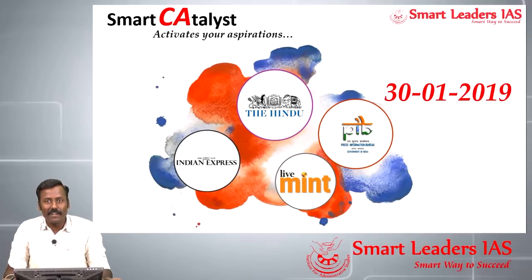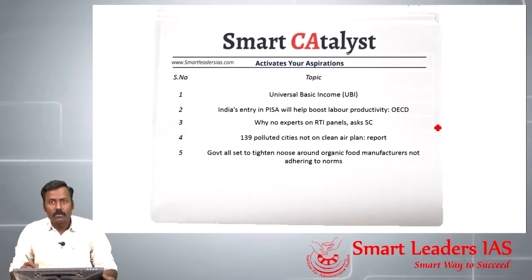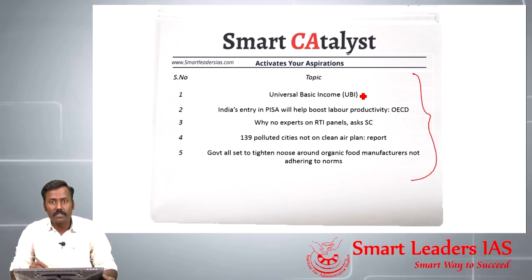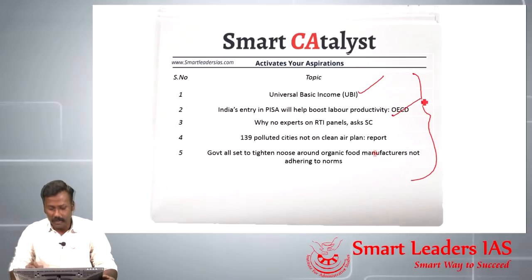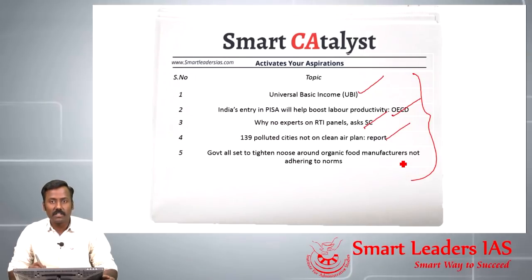Hi all, welcome to Smart Catalyst, 30th January 2019. Today we will be discussing five topics: universal basic income, India's recent entry into the PISA framework of OECD, the Supreme Court's question on RTI exports, the national clean air action plan, and organic food manufacturing in India.